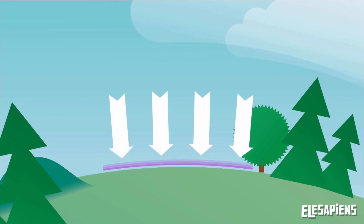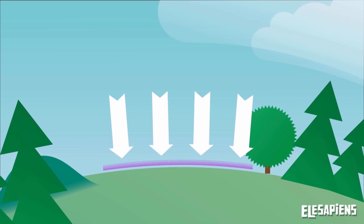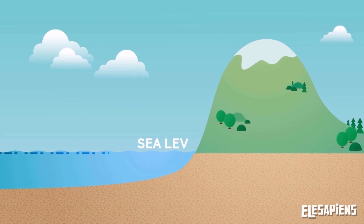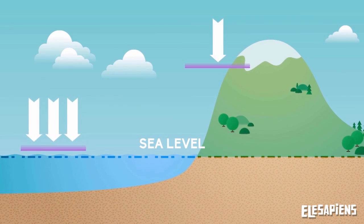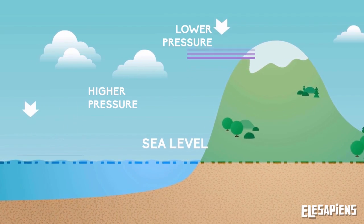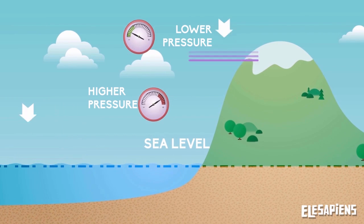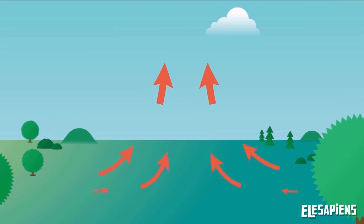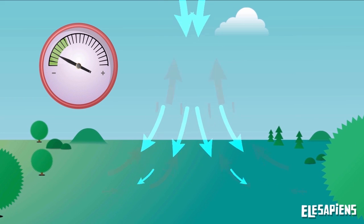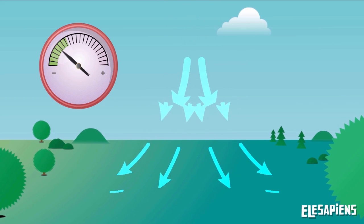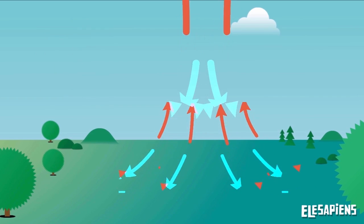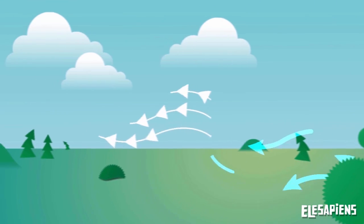Atmospheric pressure is the weight of air over the Earth's surface. Air has weight. We live at the bottom of an ocean of air. The more air above us, the greater the pressure. Pressure changes with altitude and temperature. Warm air is lightweight and goes up and is replaced by cold air, which is heavier and goes down. This movement of air masses produces winds.